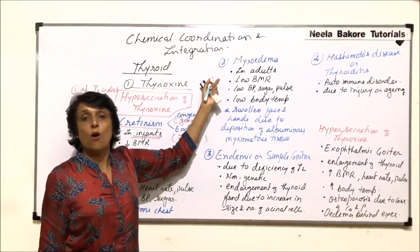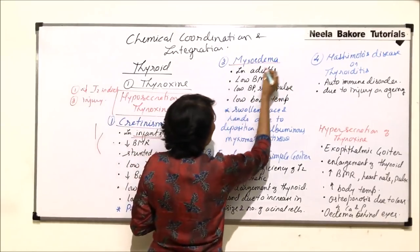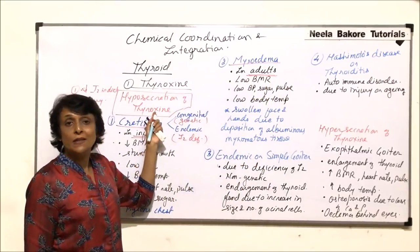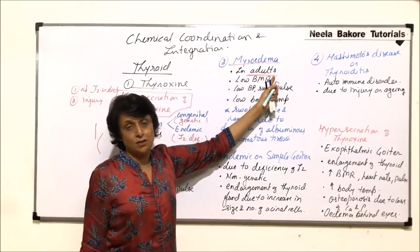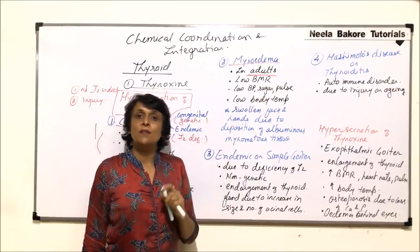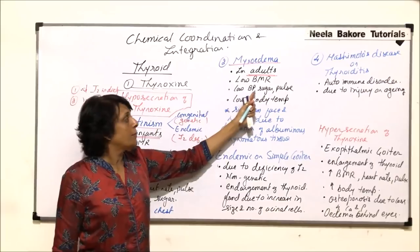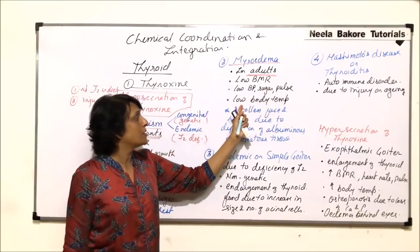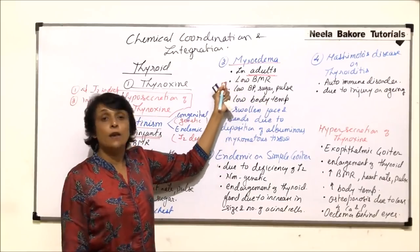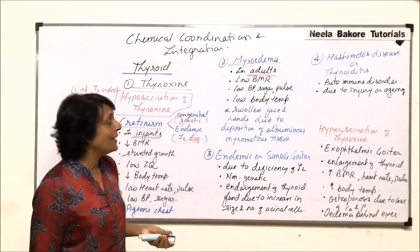Coming to the next disease or condition, which is known as myxedema. It is seen when there is hyposecretion of thyroxine in adults, meaning normal growth has already taken place. The symptoms are pretty much the same as cretinism: low BMR, low blood pressure, low sugar, low pulse, and low body temperature. Thyroxine maintains constant temperature, and if the hormone is less, body temperature would be less than normal.